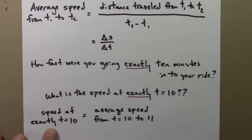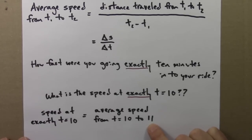So we might say that the speed at exactly t equals 10 is the average speed from t equals 10 to t equals 11.